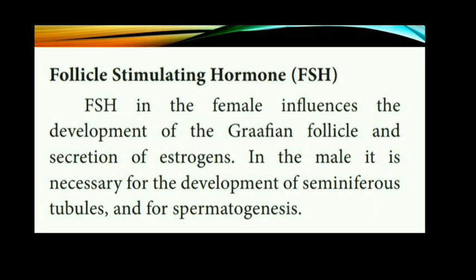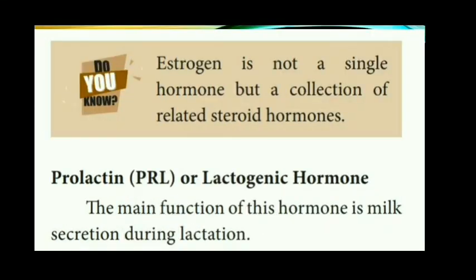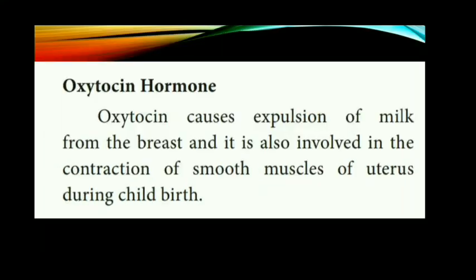The next hormone is prolactin, also called the lactogenic hormone. This hormone initiates the development of mammary glands during pregnancy and stimulates milk secretion after childbirth. Another hormone is oxytocin, which helps in the contraction of smooth muscles of the uterus at the time of childbirth and expulsion of milk from the breast after childbirth.